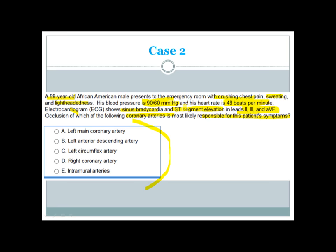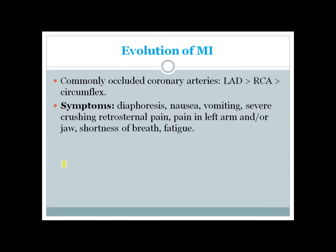The inferior surface of the heart is mainly supplied by the right coronary artery, so the answer is the right coronary artery. The most commonly occluded arteries in MI are the left anterior descending artery, right coronary artery, and circumflex artery.